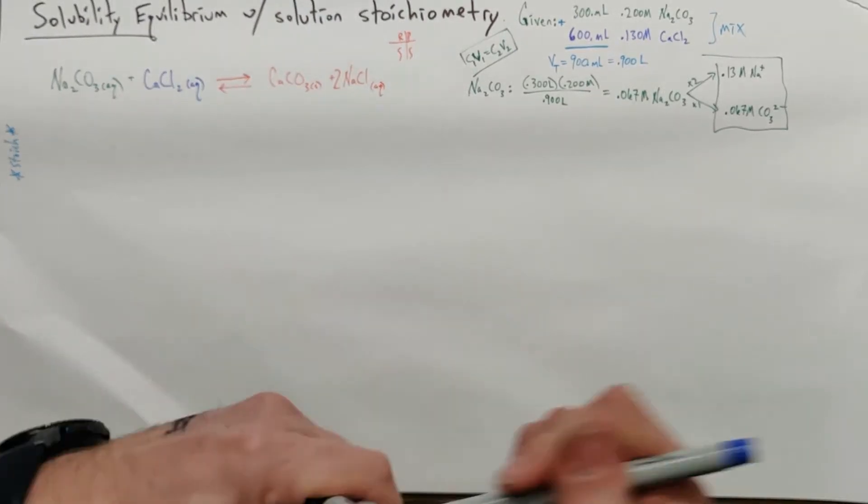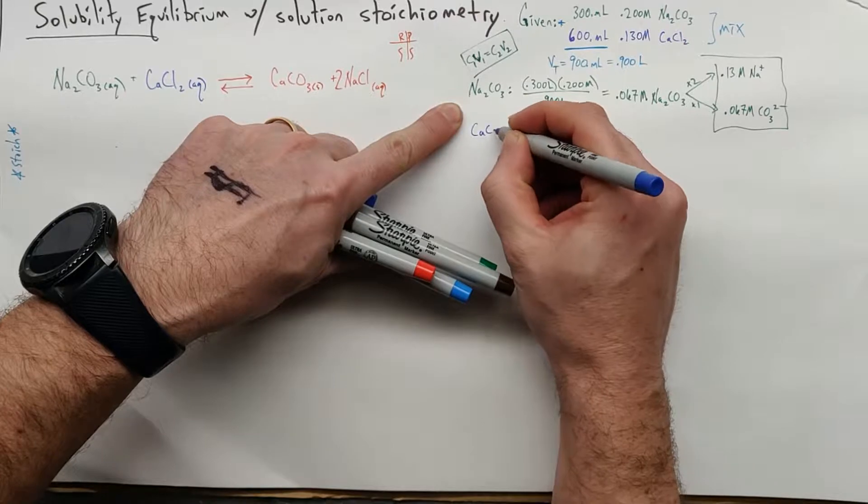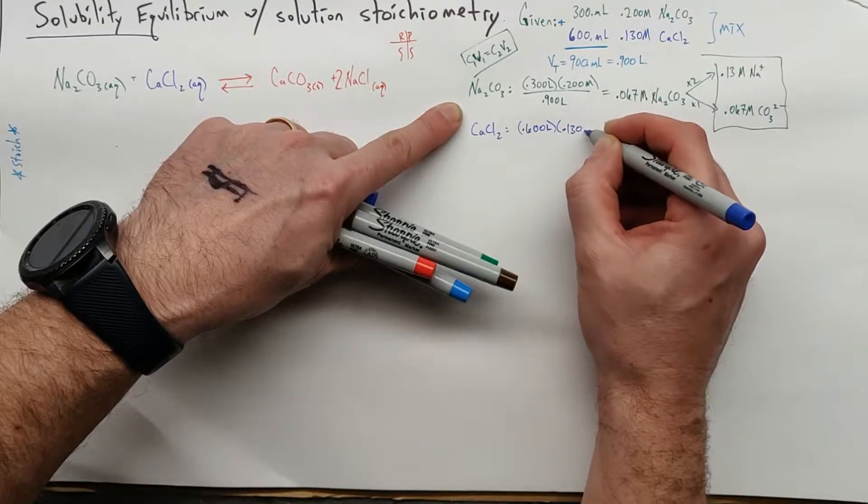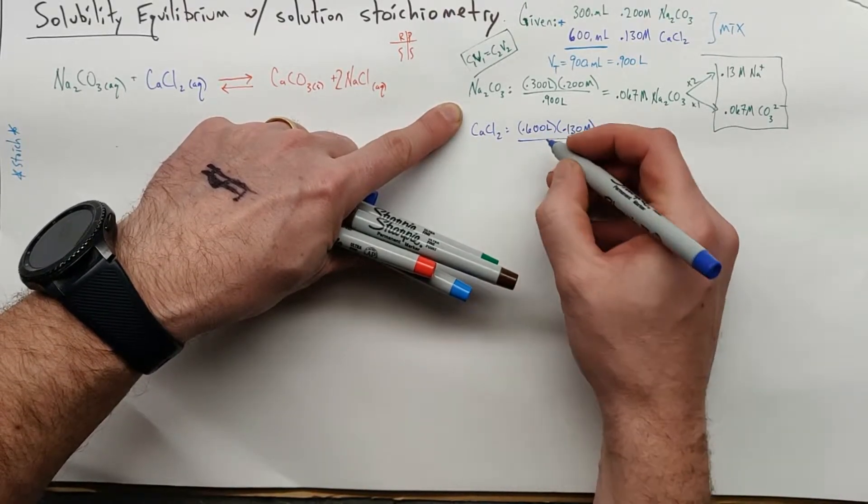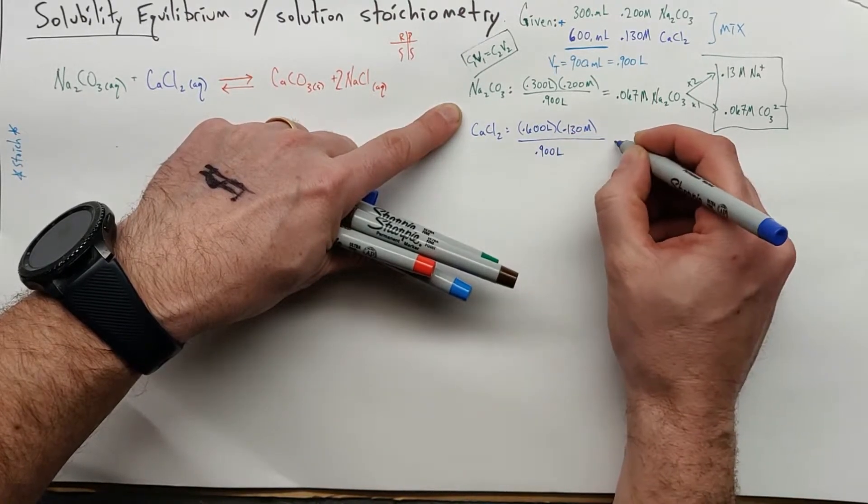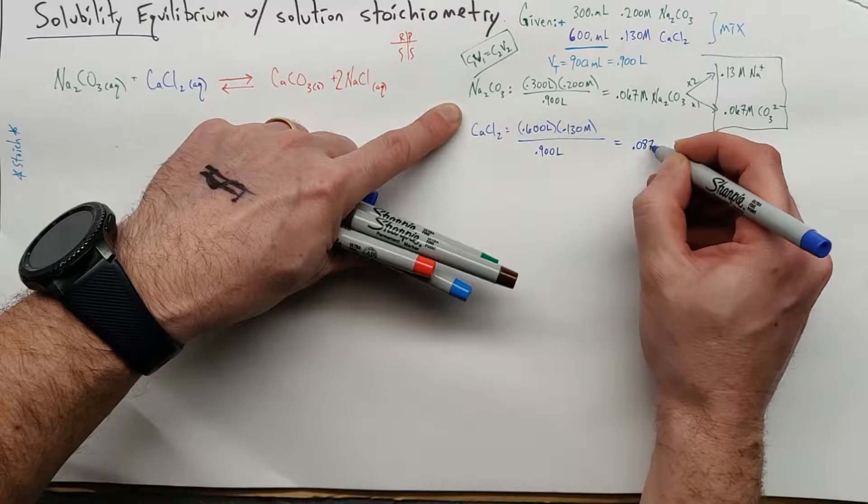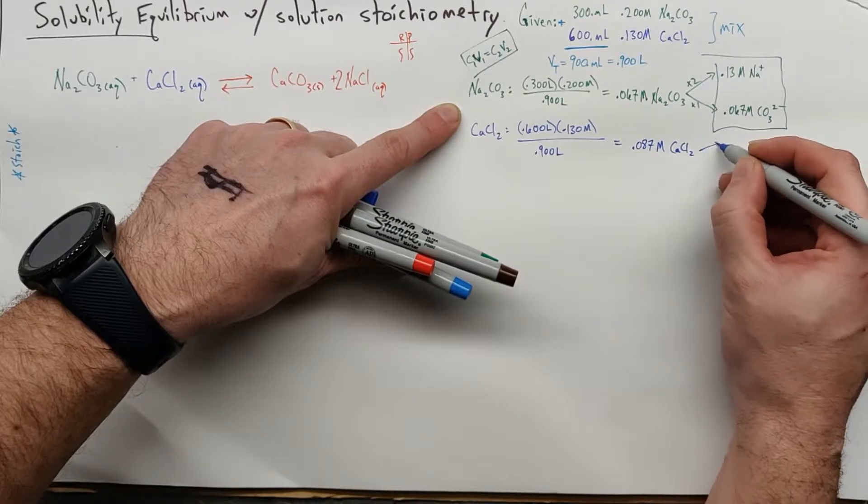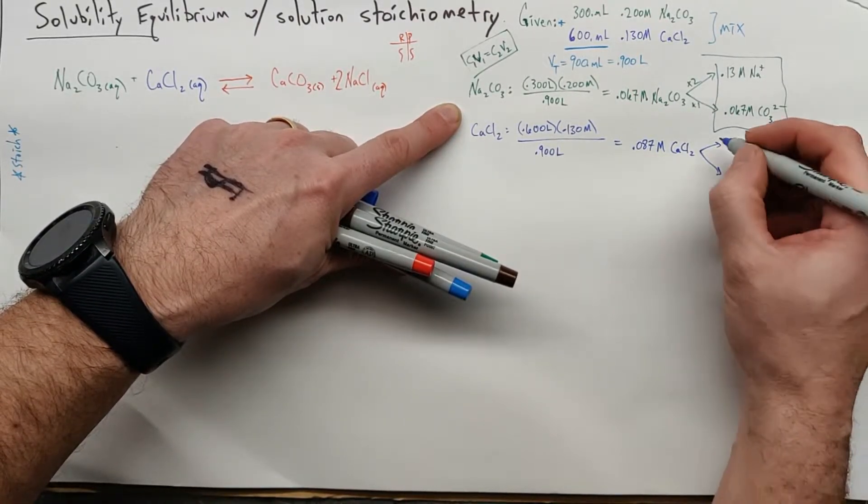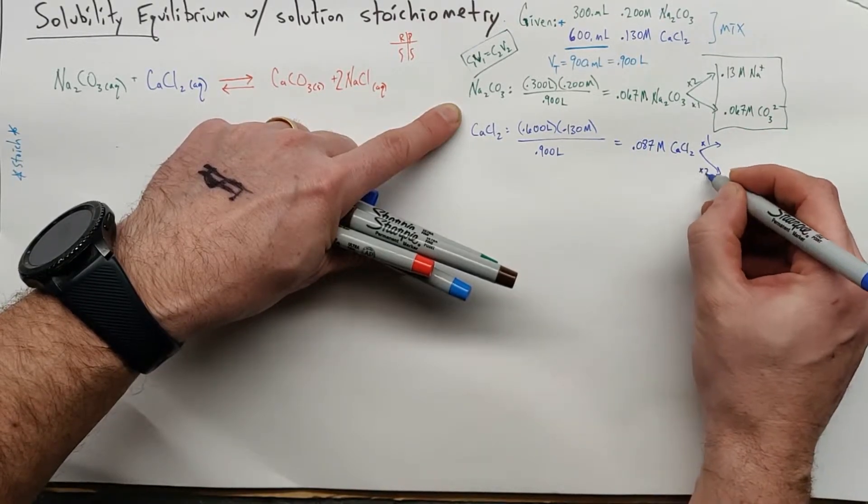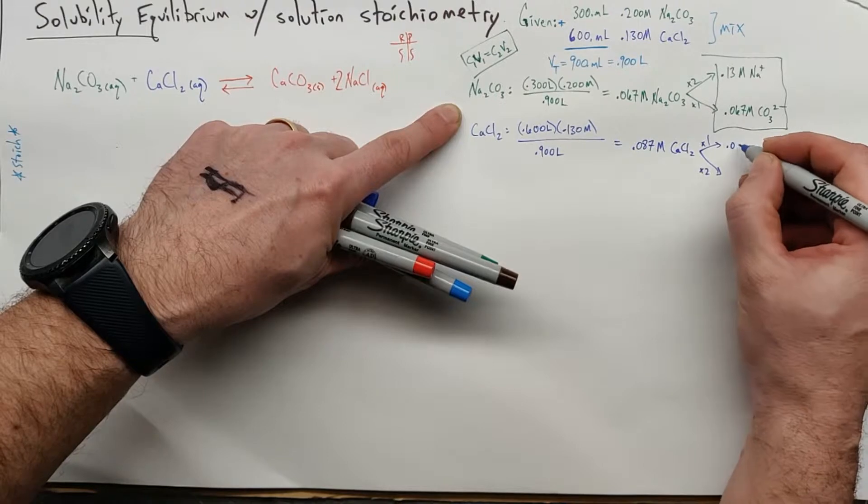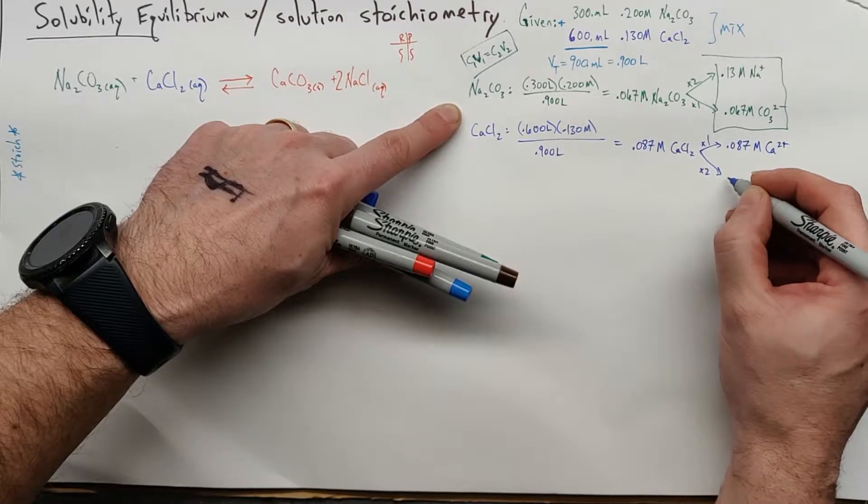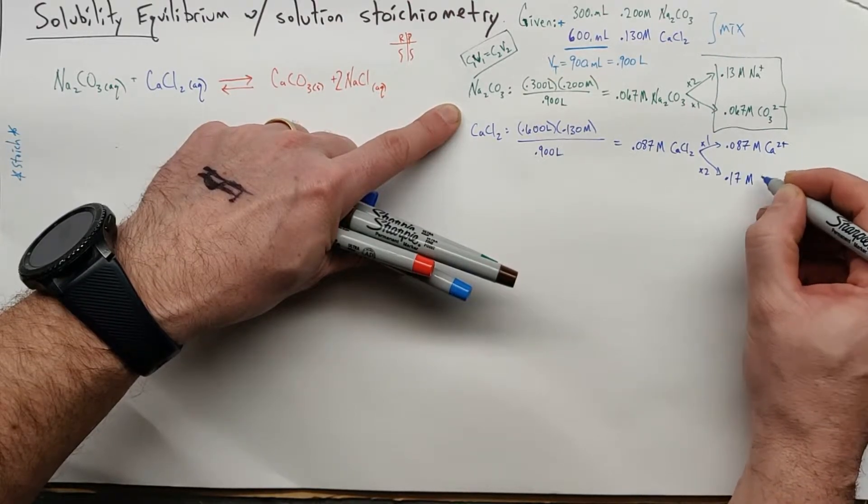We'll do the same thing with our calcium chloride. We have 0.600 liters, and that's 0.130 molar, and now we've gone from 600 mL to 900 mL, 0.900 liters. And we end up with 0.087 molar CaCl2. This is an aqueous species, a strong electrolyte, and we're going to say it dissociates. Times 1 because there's 1 calcium, times 2 because there's 2 chlorines. So you get 0.087 molar Ca2+ and double that, so we get 0.17 approximately molar Cl-.